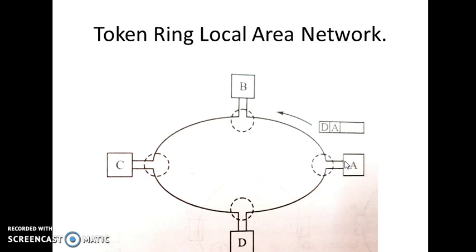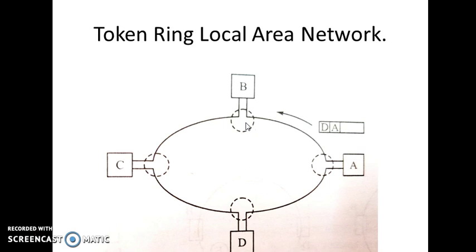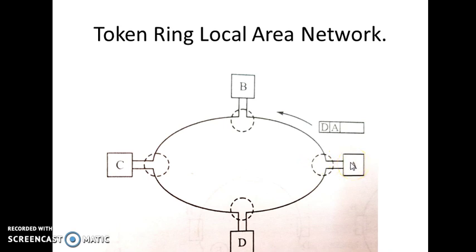We assume Station A wants to send data to Station D. A token — which is a frame that decides who can send the data — is circulating. Assume the token is at B; B doesn't want to send, so it passes the token to C. C doesn't want to send, so it passes to D. D also doesn't want to send, so it passes the token to Station A. Station A wants to send, so it first keeps the token with itself, keeps that frame inside, and then sends the data.